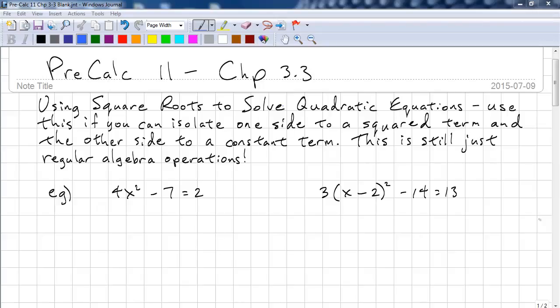This is Pre-Calc 11, Chapter 3.3. This time we'll be using square roots to solve quadratic equations, and we're going to be doing another solution using completing the square. We can use square roots if we isolate a square term on one side and a constant term on the other side. And this is just regular algebra operations.